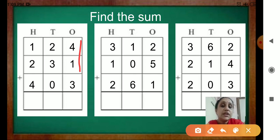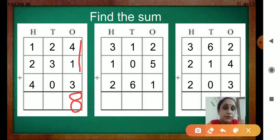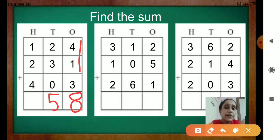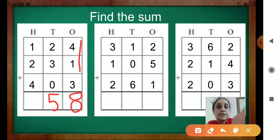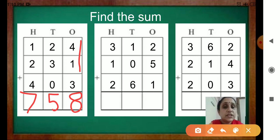Then 5 plus 3 is 8. Now come to the 10s place. 2 plus 3 is 5. And 5 plus 0 is 5. Now the 100s place: 1 plus 2 is 3. And 3 plus 4 is 7. Okay? You can solve this in your book or in the notebook.